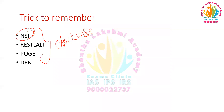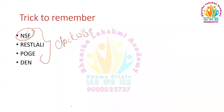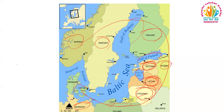Then comes Poje — Poland and Germany. And the last one is Denmark. So the full mnemonic is: NSF, Rest Lali, Poje, Den.